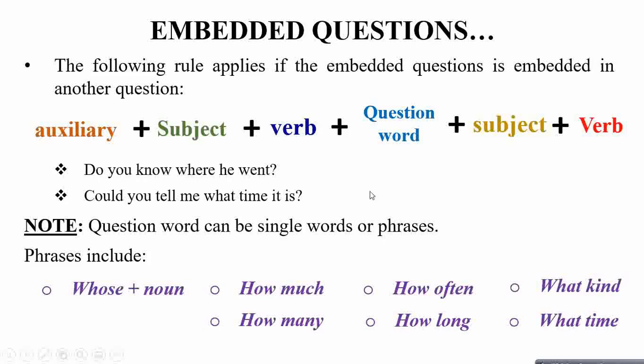If the embedded question is embedded in another question, the rule is: auxiliary, subject, verb, question word, subject, then verb. For example: 'Do you know where he went?' and 'Could you tell me what time it is?' — your first auxiliary and subject are followed by the question word, then another subject and verb.